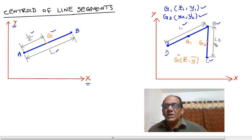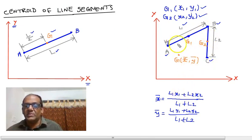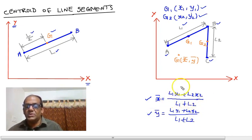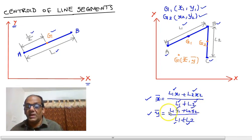We use the concept of composite areas and apply it here, because this is a composite line segment consisting of two primitive line segments: straight line AB and straight line BC. The centroid of this composite line object is located by coordinates x-bar and y-bar, given by the formulae: x-bar = (l1·x1 + l2·x2) / (l1 + l2), and y-bar = (l1·y1 + l2·y2) / (l1 + l2). Notice this formula is very similar to the composite area formula, where area A is replaced by length l.